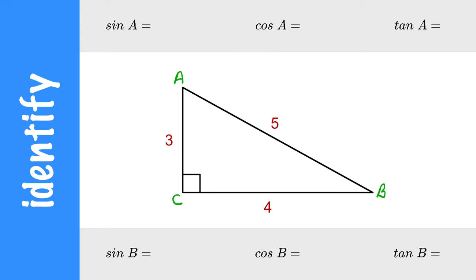And the ratios are not for the right angle. It's for the other two vertices, from the point of A and from the point of B.